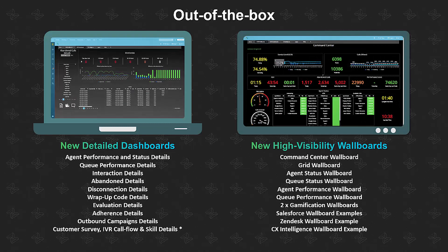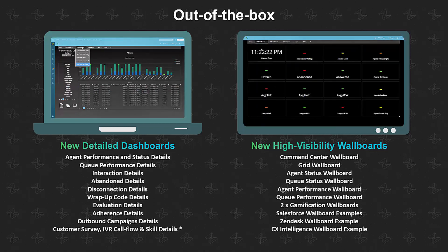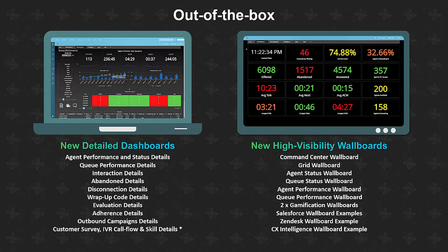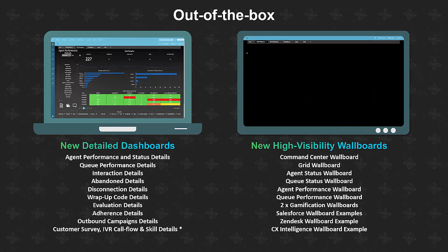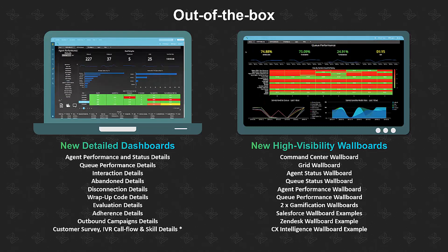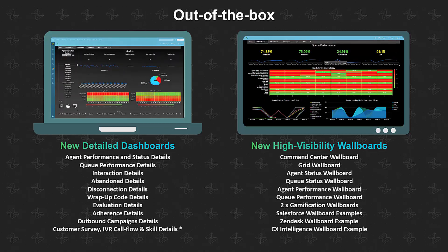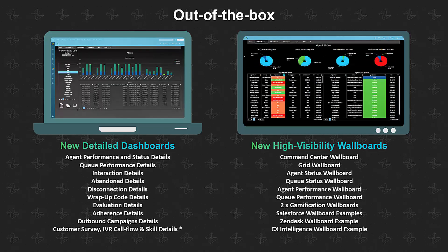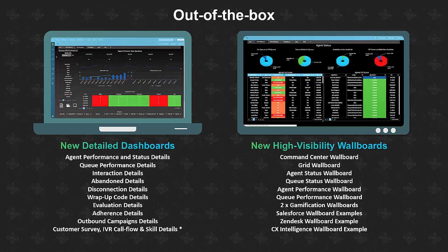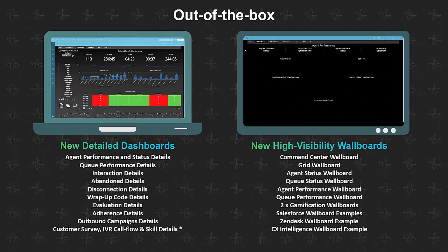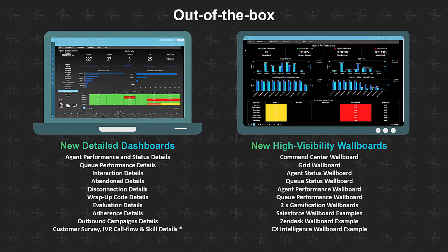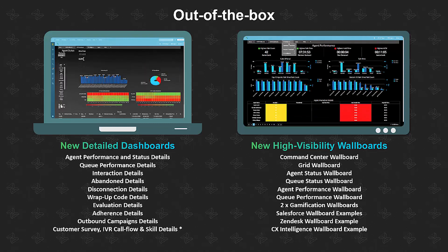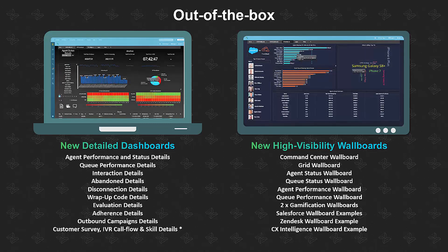Along with this, Emite has included a large number of high-visibility wallboards. Starting off with the command center, which shows you what's happening today. Then we have grid wallboards, agent and queue and status wallboards, and gamification examples to show you how you can create leaderboards. We also show you how you can correlate data with the likes of Salesforce and Zendesk, and we even give you a CX intelligence example where we have multiple data sources coming into the one wallboard.